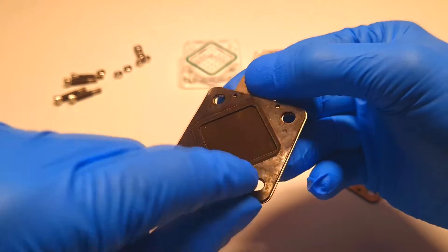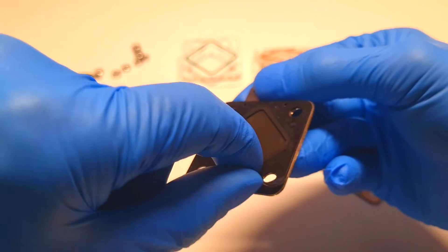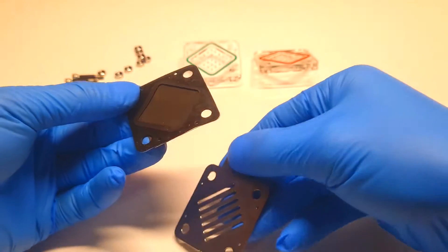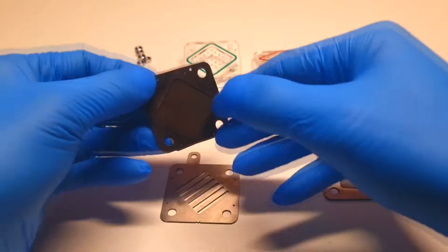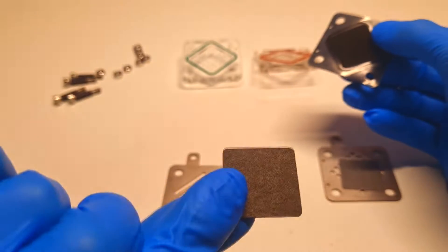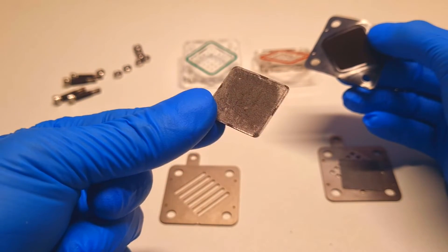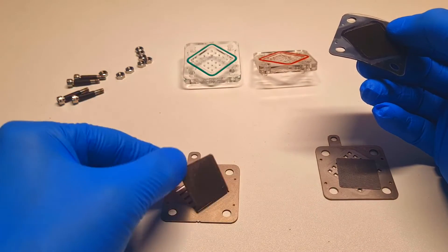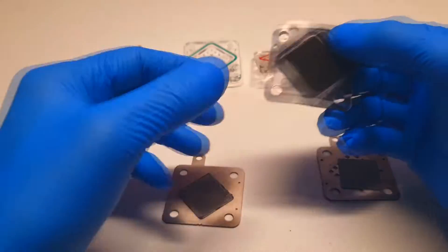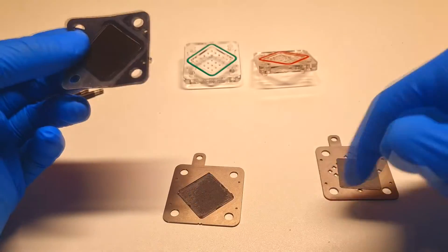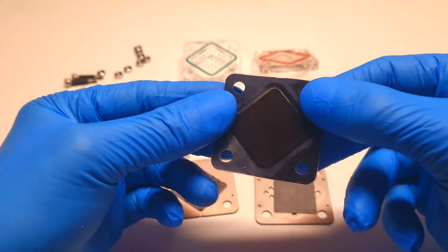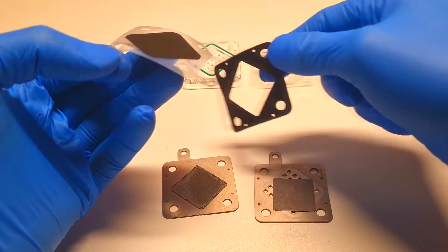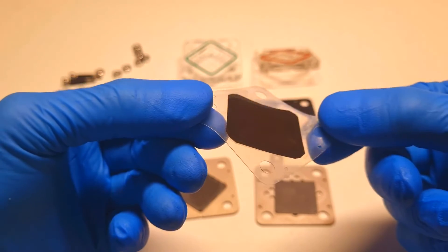Then here we have another layer of gasket. Then again another piece of carbon paper which is also coated with platinum. These electrodes are separated by this proton exchange membrane, which is this one.